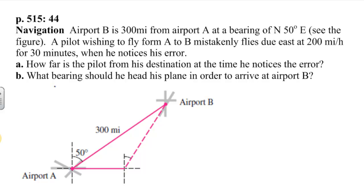A pilot wishing to fly from A to B mistakenly flies due east at 200 miles per hour for 30 minutes. When he notices his error, boy, good pilot.